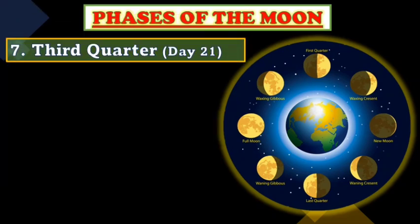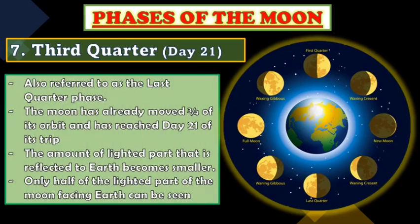Number seven is the Third Quarter, also referred to as the Last Quarter, on day twenty-one. The Moon has moved three-fourths of its orbit. The amount of lighted part reflected to Earth becomes smaller, and only half of the lighted part of the Moon facing Earth can be seen.